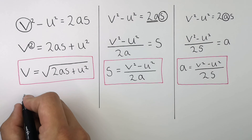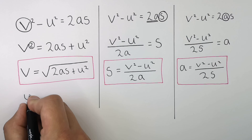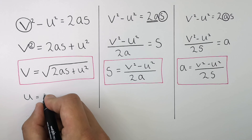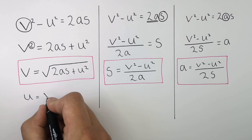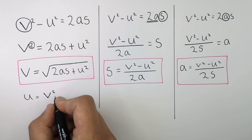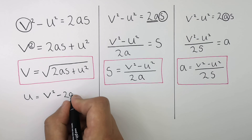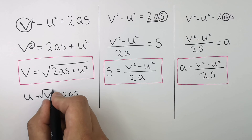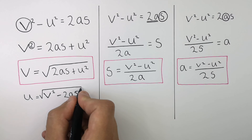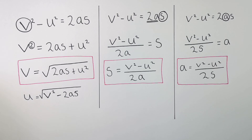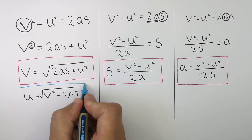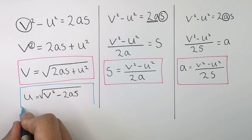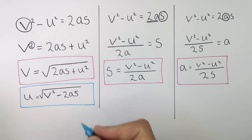And to rearrange for U — initial velocity — it's U equals the square root of V-squared minus 2AS.